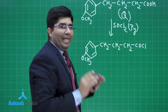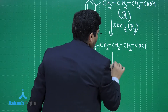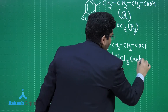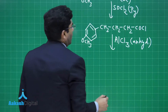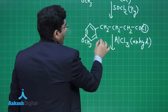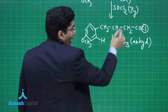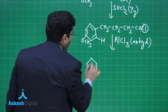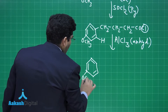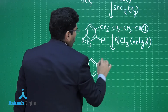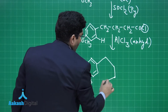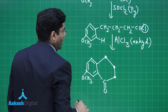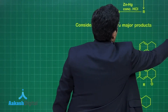The next reagent is AlCl3 (anhydrous), which causes an intramolecular acylation — a Friedel-Crafts reaction. The chlorine and hydrogen leave, and the acyl group attacks the benzene ring. We get a cyclic structure: a 1-2-3 carbon ring attached to the benzene ring with a C=O group.